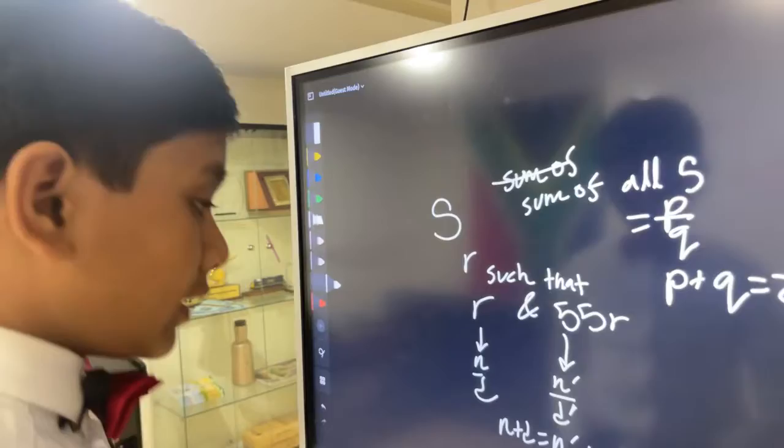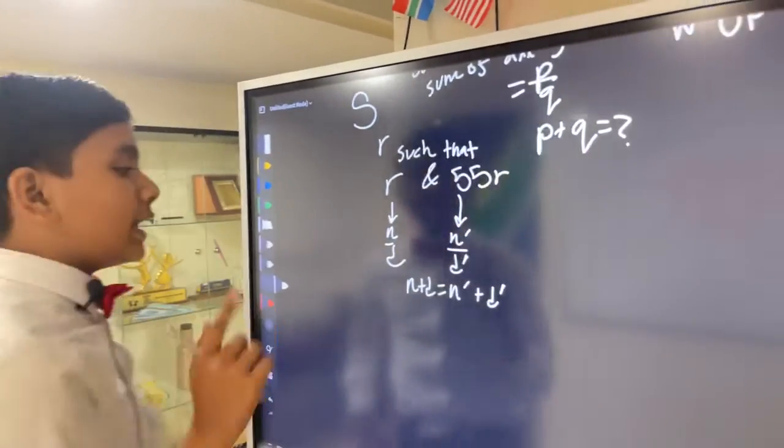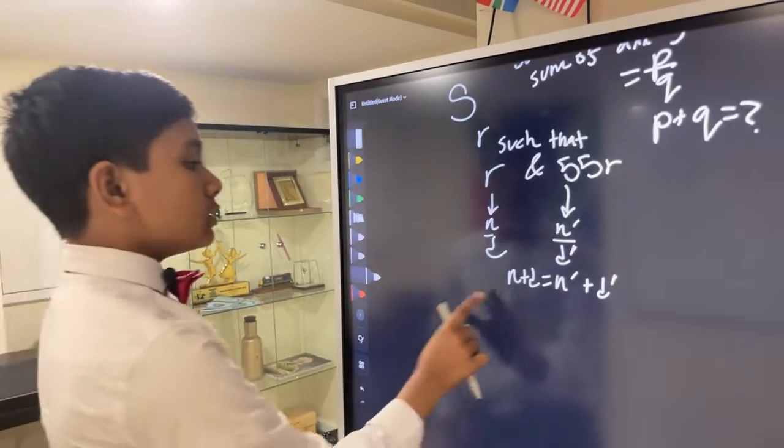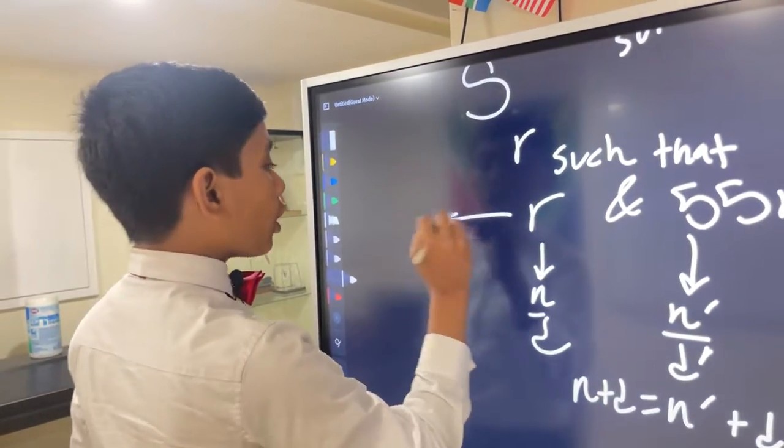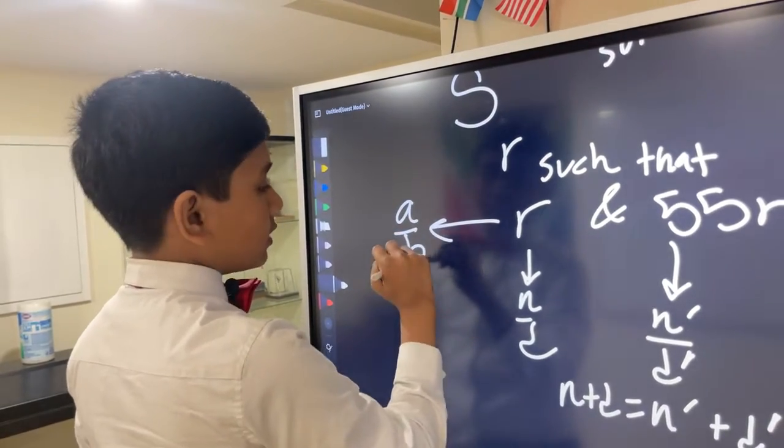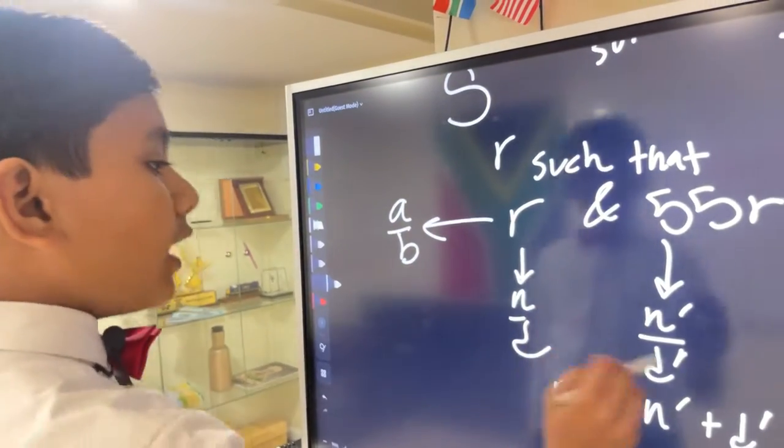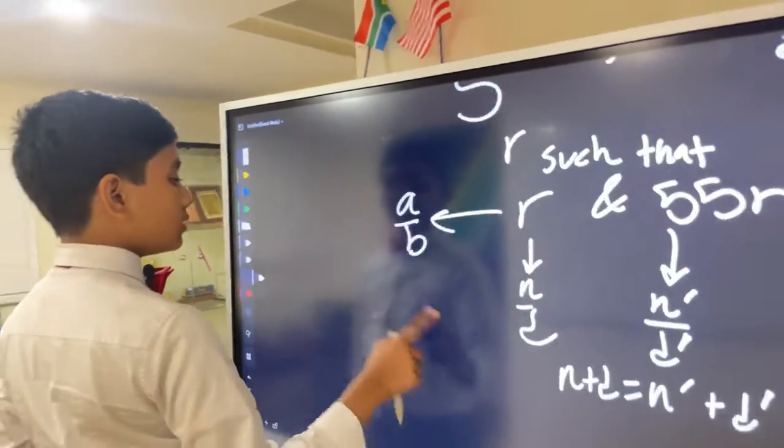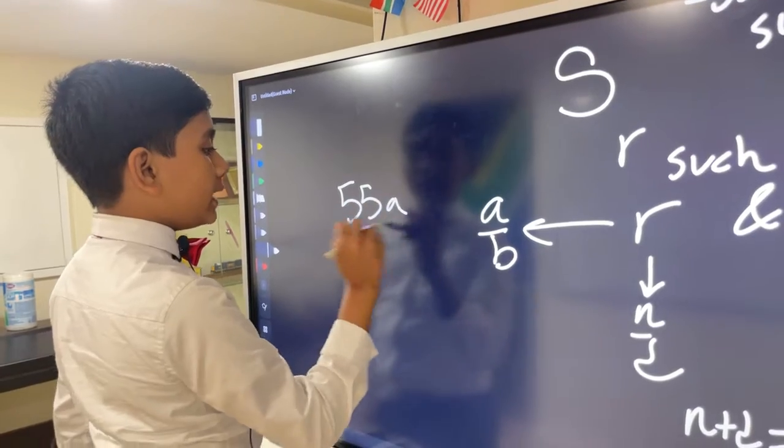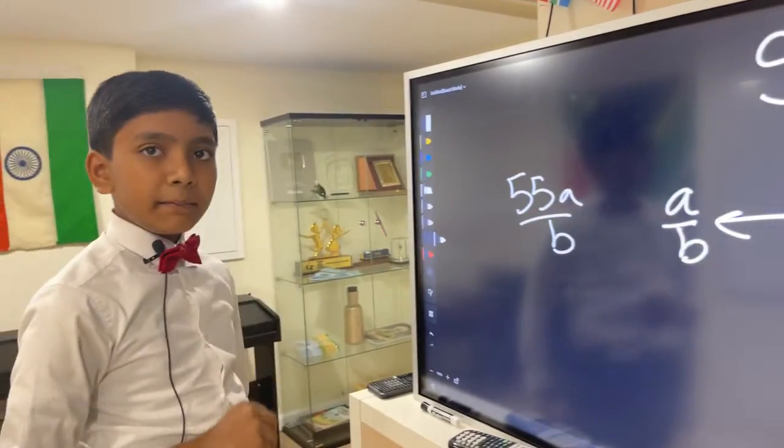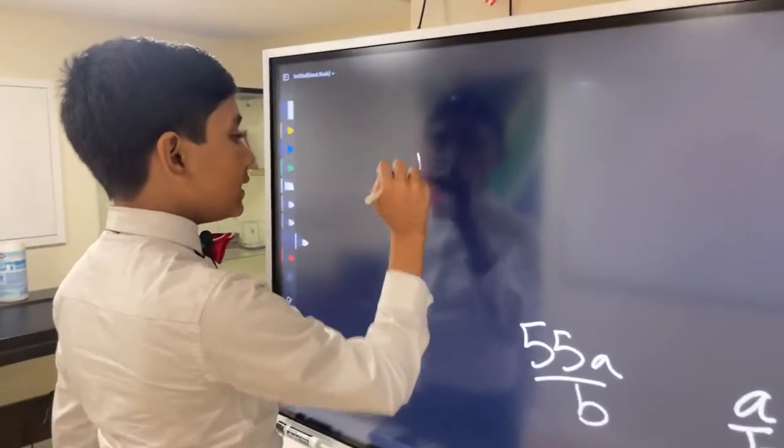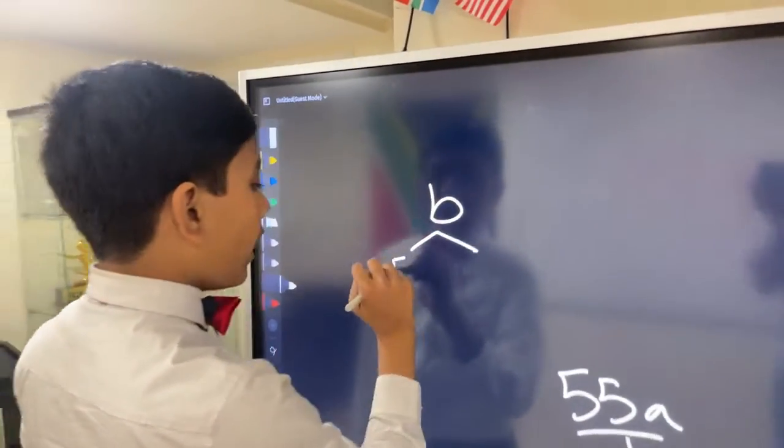Alright, now it looks really tricky on the surface, but it really isn't. So here's how I went about solving it, but you might think of a faster method. So first of all, N over D. Let's say R is A over B. So now, if 55R can be expressed in a form different from N over D, so if 55A over B can be reduced further, that means B must share one of the factors of 55. So B could have either 5 or 11 as one of its factors.